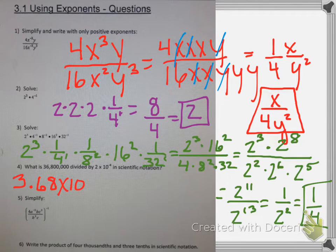Number 4, the first thing I want to do is turn that big number into scientific notation: 3.68 times 10 to the 7th divided by 2 times 10 to the negative 4th.